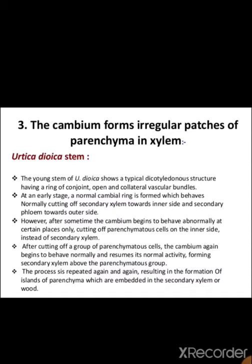After cutting a group of parenchymatous cells, the cambium again begins to behave normally, forming secondary xylem above the parenchymatous group. This process is repeated again and again, resulting in the formation of islands of parenchyma which are embedded in secondary xylem or wood.